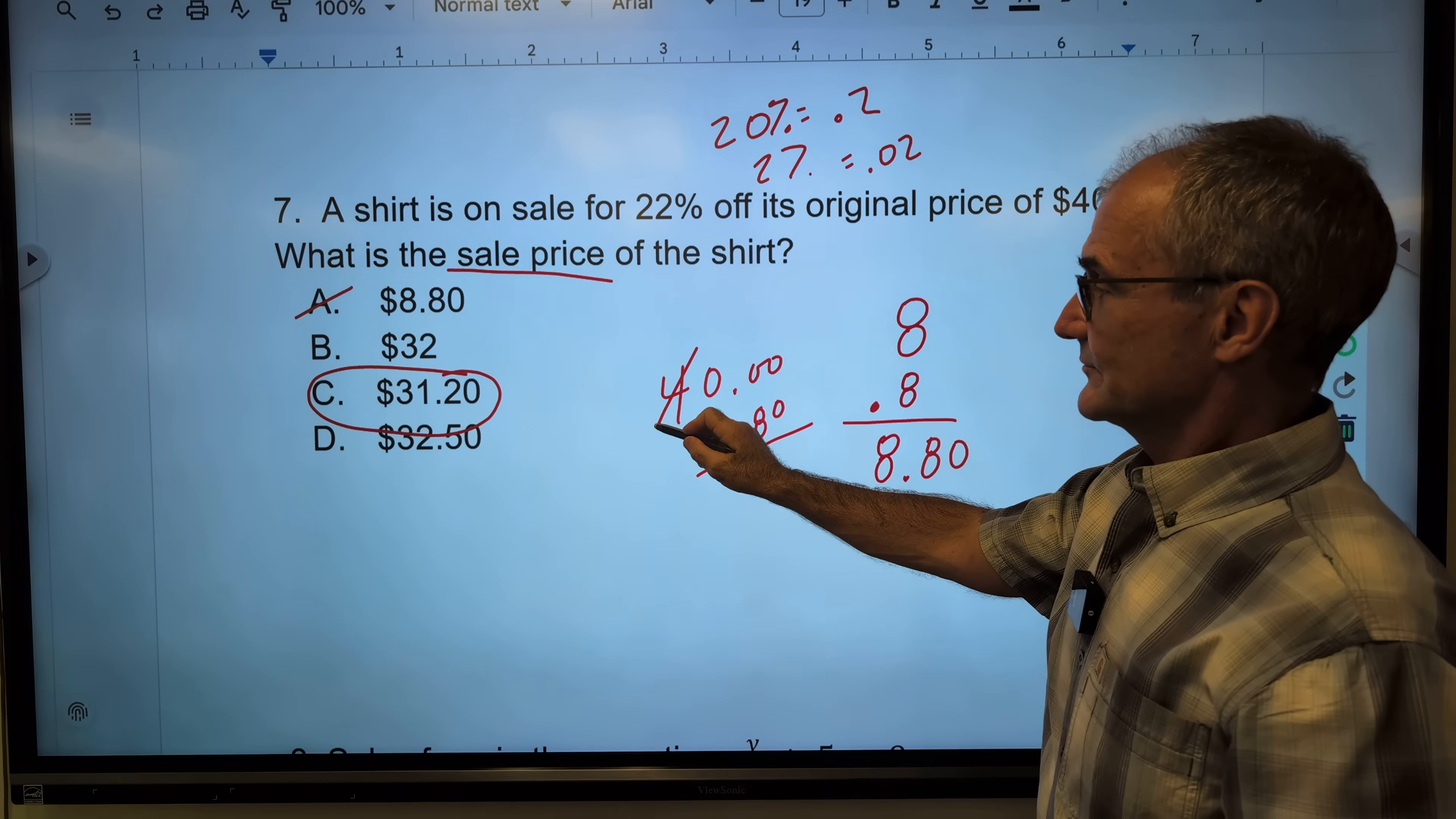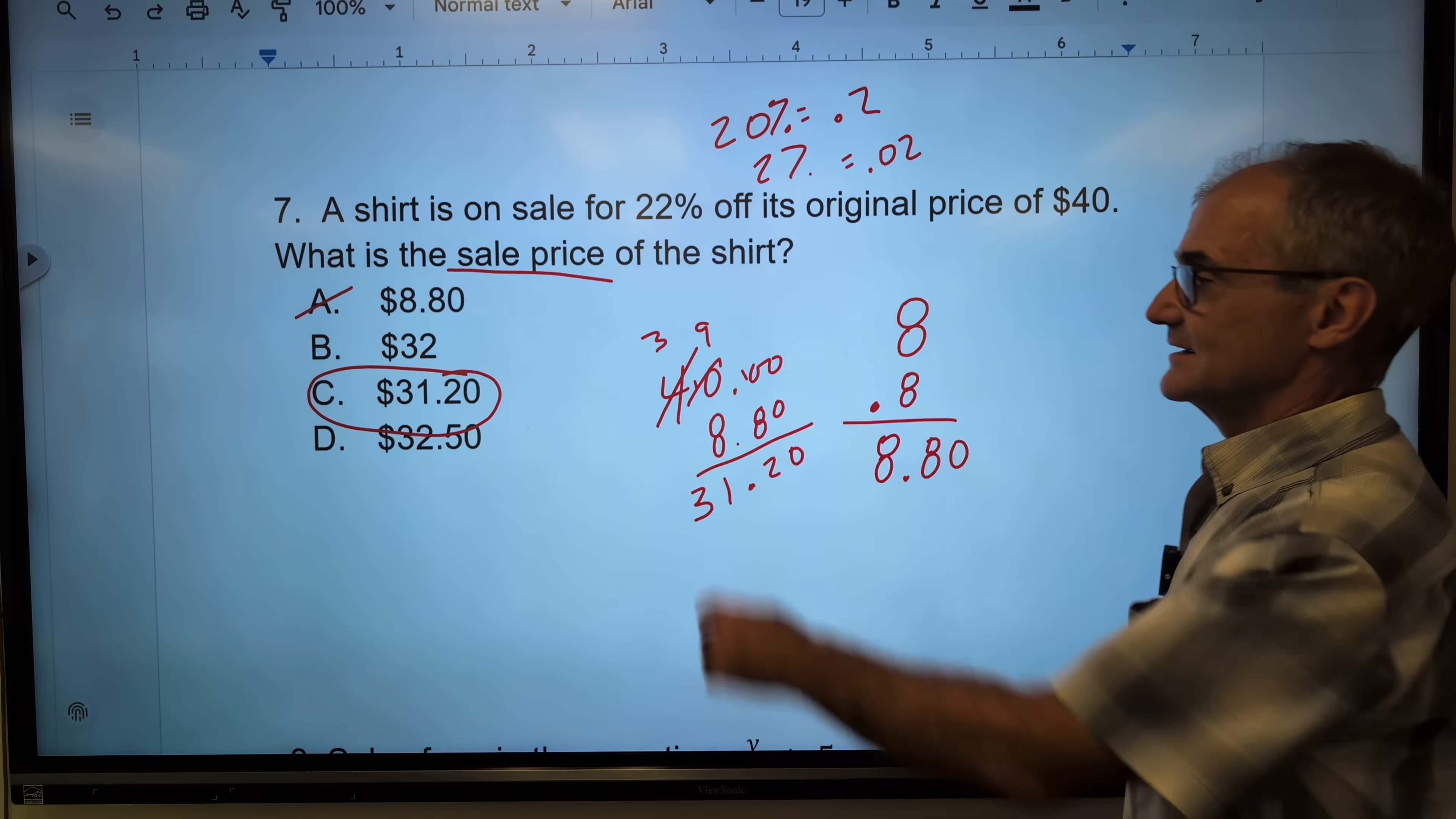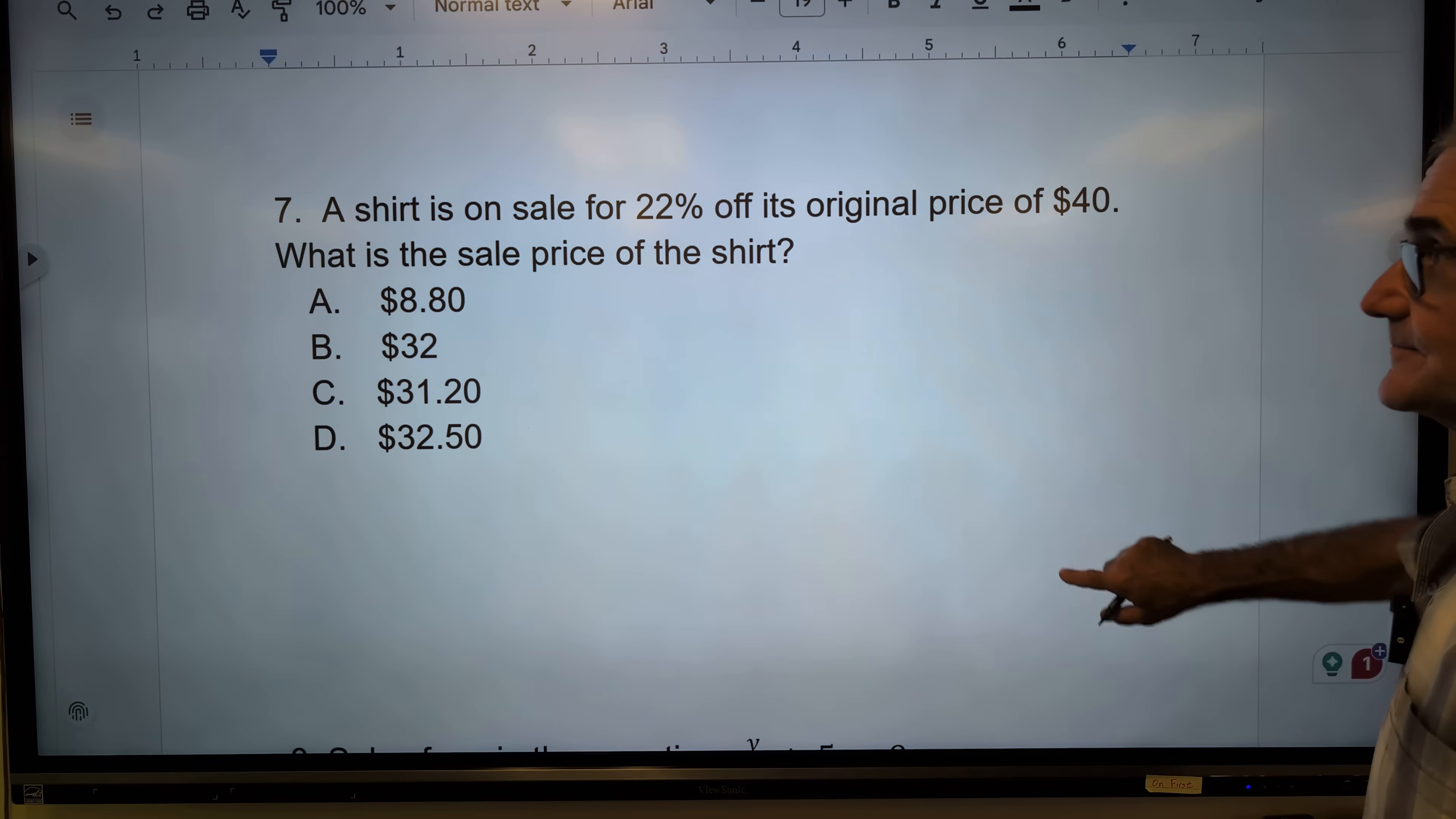I could borrow from here, make this a 3, make this a 10, borrow from this, make this a 9, make this a 10. And then I have 100 cents minus 80 cents gives me 20 cents. 9 minus 8 is 1, and I have 31.20. Correct answer, answer C. Sometimes those shortcuts come to you if you do enough practice. Sometimes you don't see them and you've got to do that out, and that's great. But wherever you could pick up a little extra time, you want to use those shortcuts.